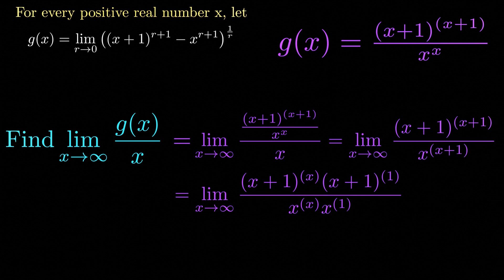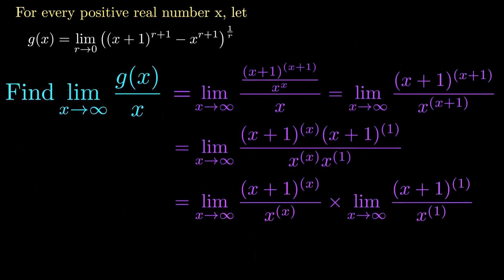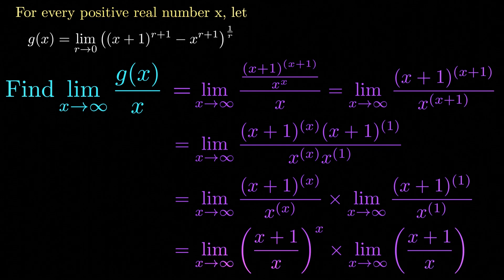We can factor out x plus 1 raised to x and x plus 1 raised to the first power, and do the same with the denominator. This allows us to rewrite our limit as the product of two limits: the limit as x approaches infinity of x plus 1 raised to x divided by x raised to x, multiplied by the limit as x goes to infinity of x plus 1 divided by x.